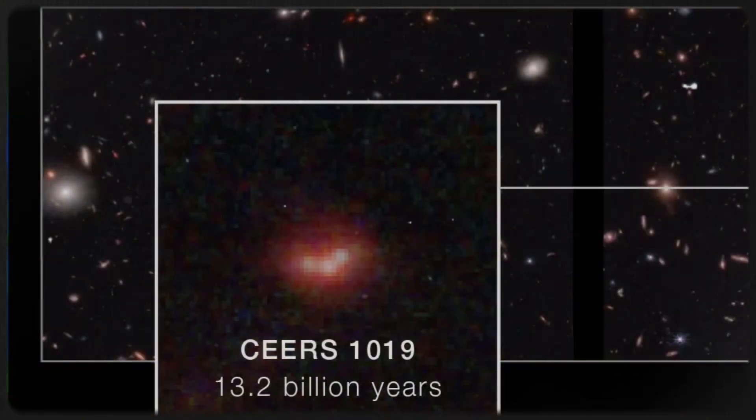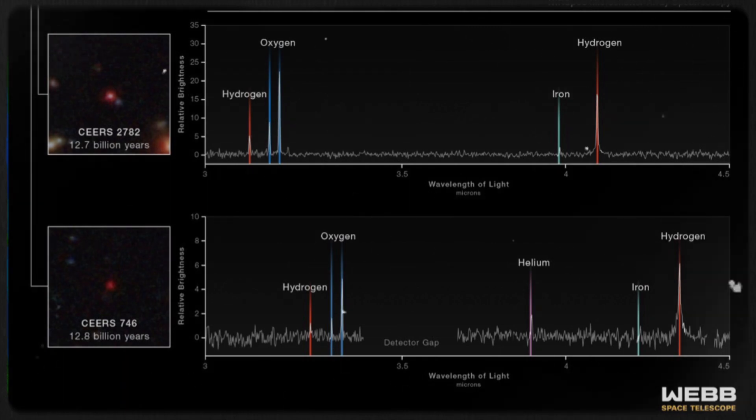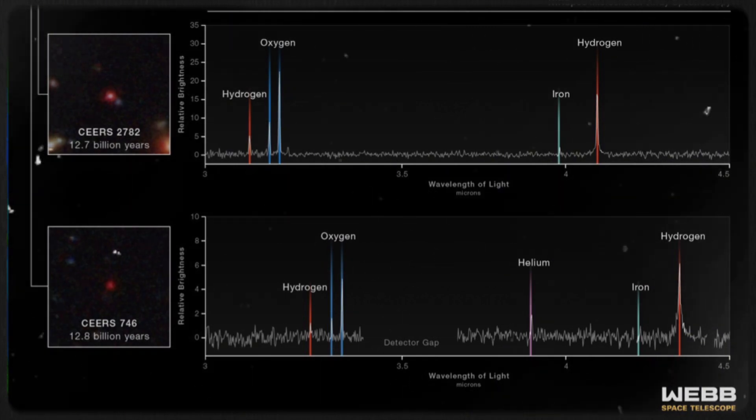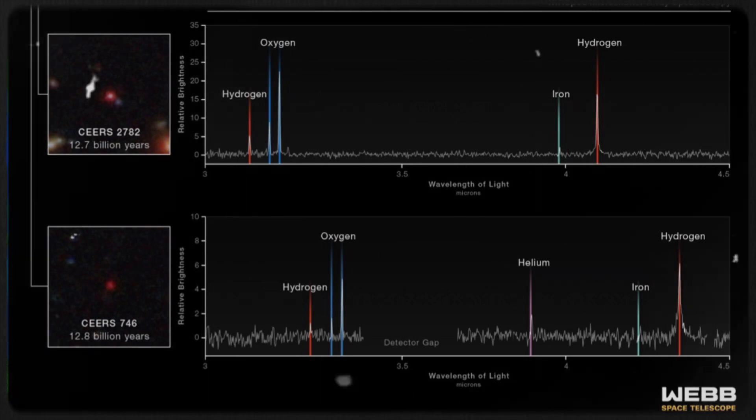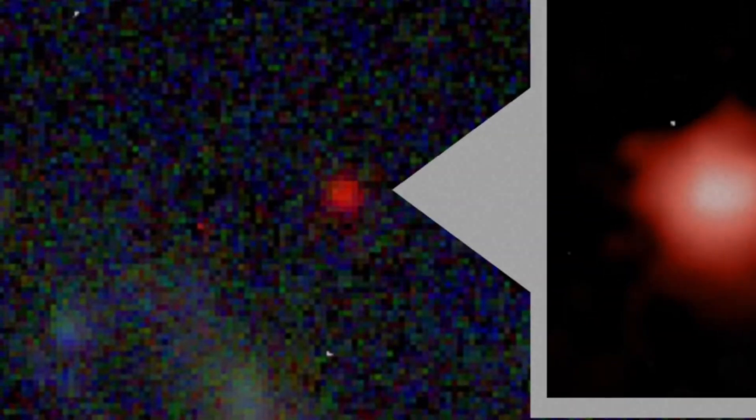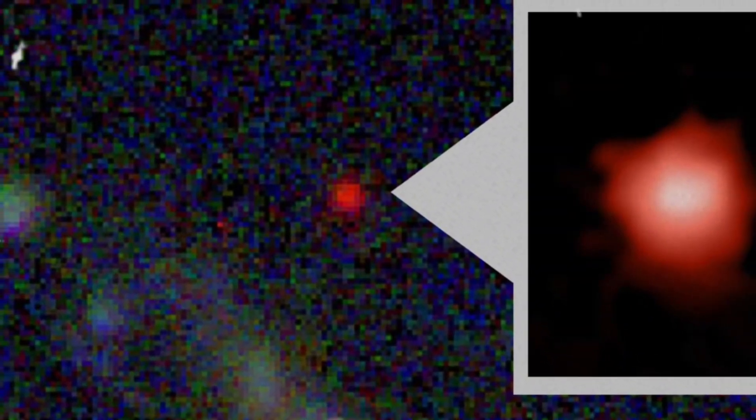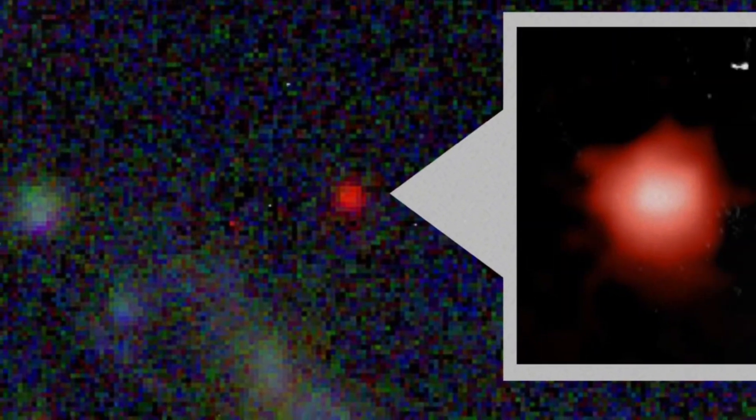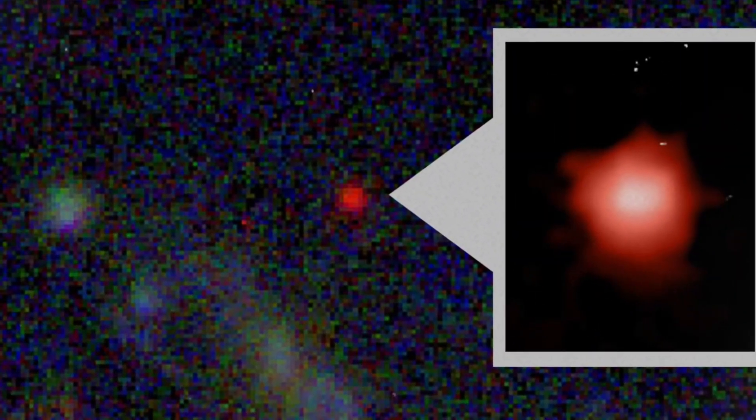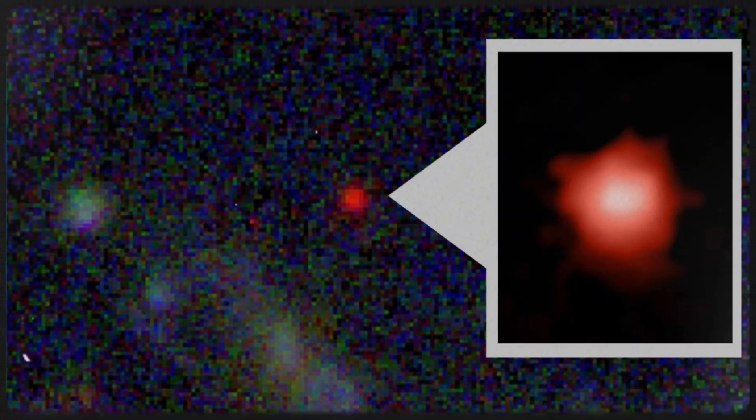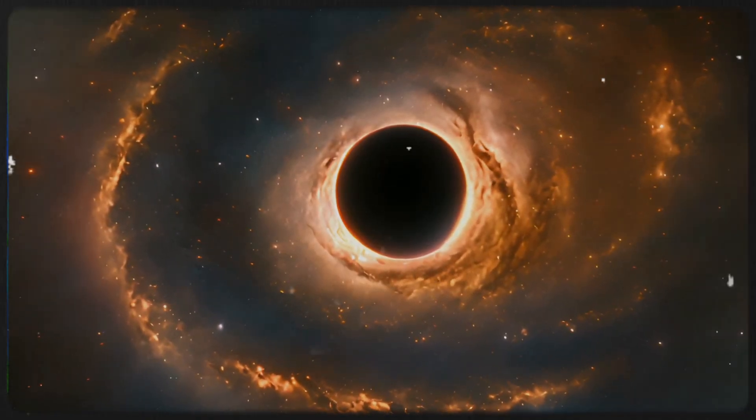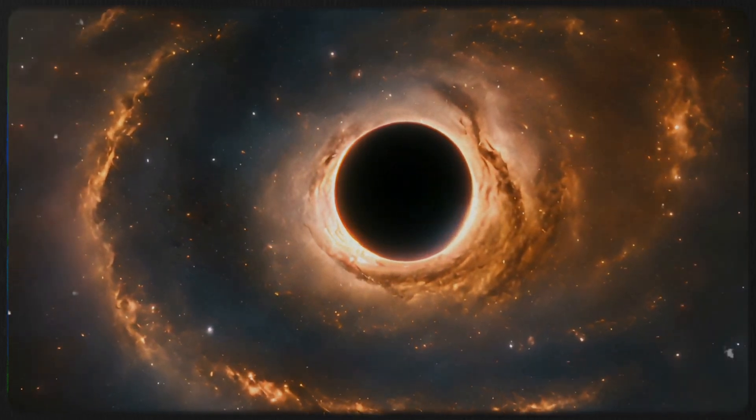Beyond the groundbreaking insights from CS 1019, the discoveries in CS 2782 and CS 746 add further complexity to the narrative. These galaxies, which took shape around a billion years after the Big Bang, also contain relatively small black holes. While not as ancient as CS 1019, their modest masses raise questions about the pace and mechanisms of black hole growth. Could these objects be the remnants of primordial black holes, or do they hint at an entirely new formation process? The key may lie in the intricate dynamics between stars, gas, and gravitational forces within these galaxies.